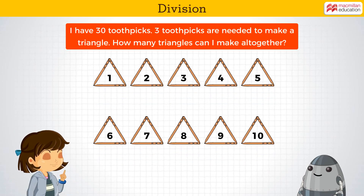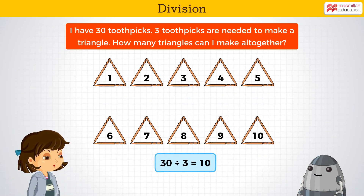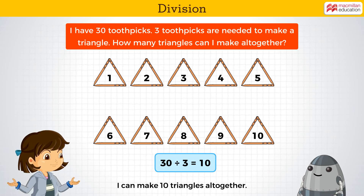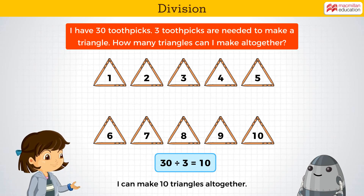So 30 divided by 3 gives us 10. That is, I can make 10 triangles altogether. Solving this problem was so much fun, Jocelyn!